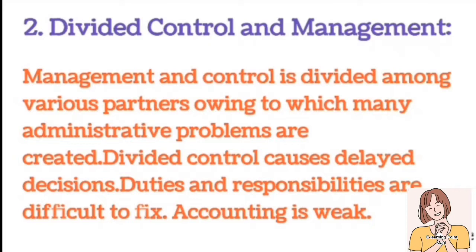نمبر 2 پر disadvantage ہے تقسیم شدہ control اور انتظام۔ انتظام اور control کو مختلف شراکتداروں میں تقسیم کیا جاتا ہے جس کی وجہ سے بہت سے انتظامی مسائل پیدا ہوتے ہیں۔ منقسم control فیصلوں میں تاخیر کا سبب بنتا ہے، فرائض اور ذمہ داریوں کو طے کرنا مشکل ہوتا ہے، احتساب کمزور ہوتا ہے، باہمی مشاورت سے گریز کیا جاتا ہے جس کے نتیجے میں شراکتداروں کے درمیان disagreement پیدا ہو جاتی ہے۔